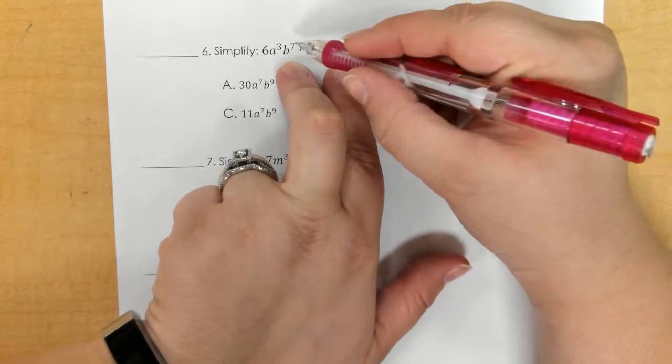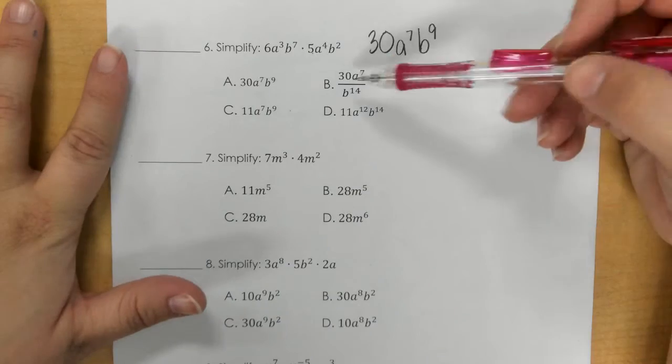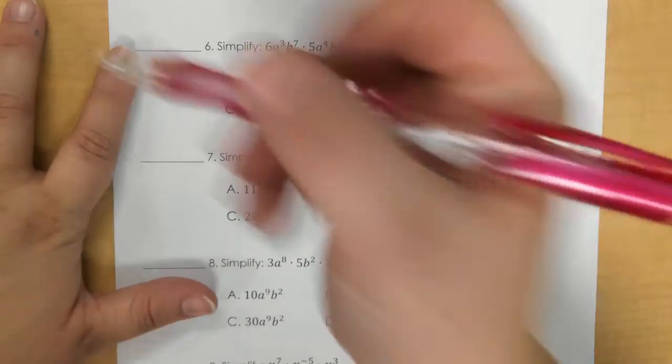And then the B's, we would add again, so 7 and 2 make 9. So I need to find 30a⁷b⁹, so it looks like A.